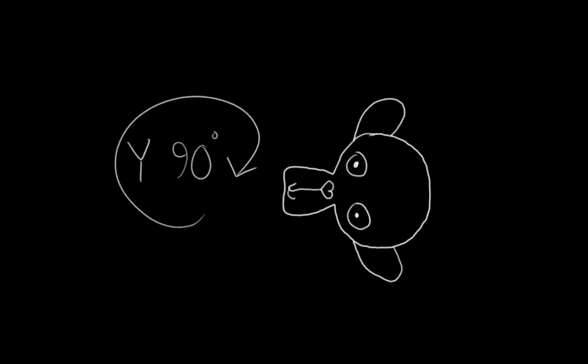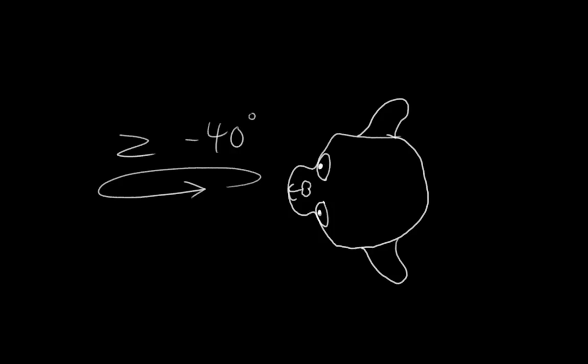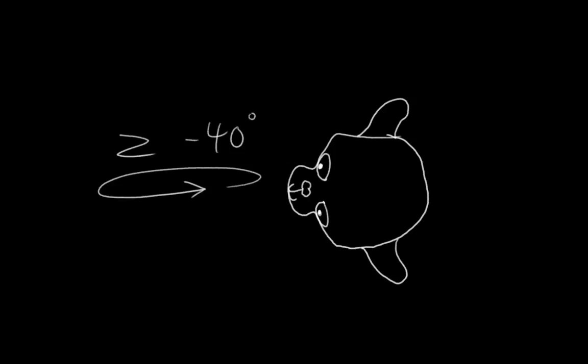then the y-axis 90 degrees, and then the z-axis negative 40 degrees. By rotating around the major axes one at a time, we can rotate the object into any orientation we like.